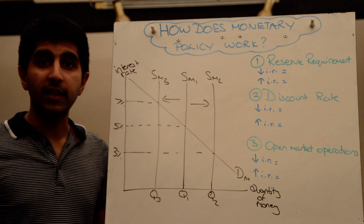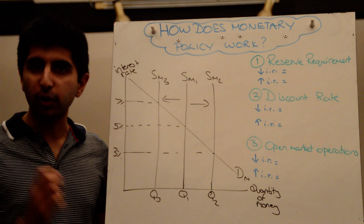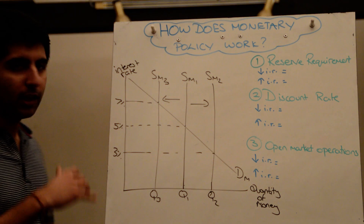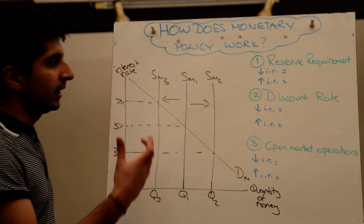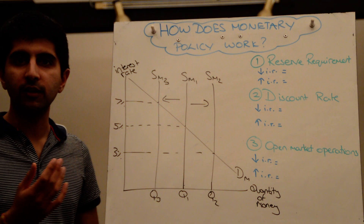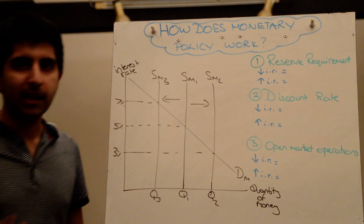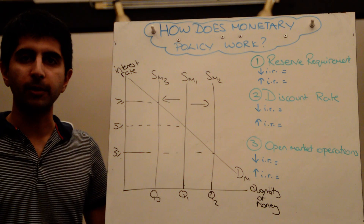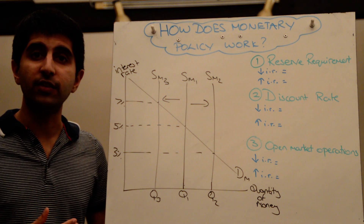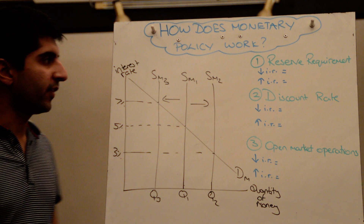So depending on the state of the economy and the level of inflation — because the Bank of England and the Monetary Policy Committee in the UK have a set inflation target — they will decide whether to increase, decrease, or keep interest rates the same. In theory, the Bank of England has three tools available by which they can manipulate the supply of money in the money market and therefore change the interest rate for ordinary consumers and savers in the economy.